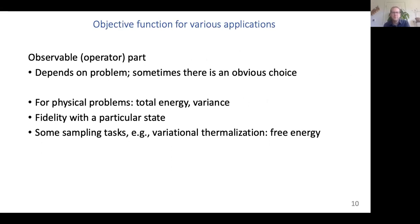The different objective functions depend very much on the problem at hand. For physical problems, it makes sense to consider the total energy if looking for the ground state, or the variance in energy if interested in a particular eigenstate of the Hamiltonian. Another possibility would be the fidelity of your trial wave function with a particular target state. There are also more general scenarios, such as sampling tasks where you want to calculate the free energy, which requires looking at a Gibbs state — a mixed state — and therefore some sampling.